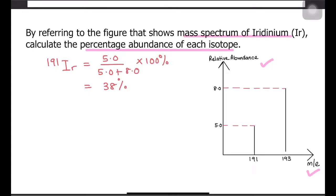Next, do the same with the second isotope. The relative abundance of iridinium 193 would be 8.0, divide this value with the total abundance and multiply it with 100 percent. The answer would be 62 percent.